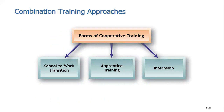Combination training methods combine different approaches into a single training, including school-to-work transition. Trainees spend half a day studying or training and the other half working. For example, we were sent to the State Bank of Pakistan to give training from 9 a.m. to 1 p.m. — four hours of training — and the rest of the time employees continued their regular office work.